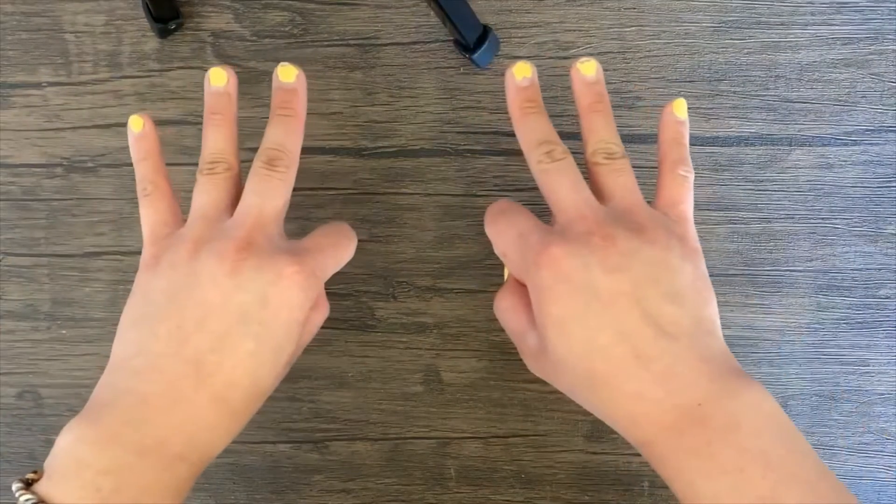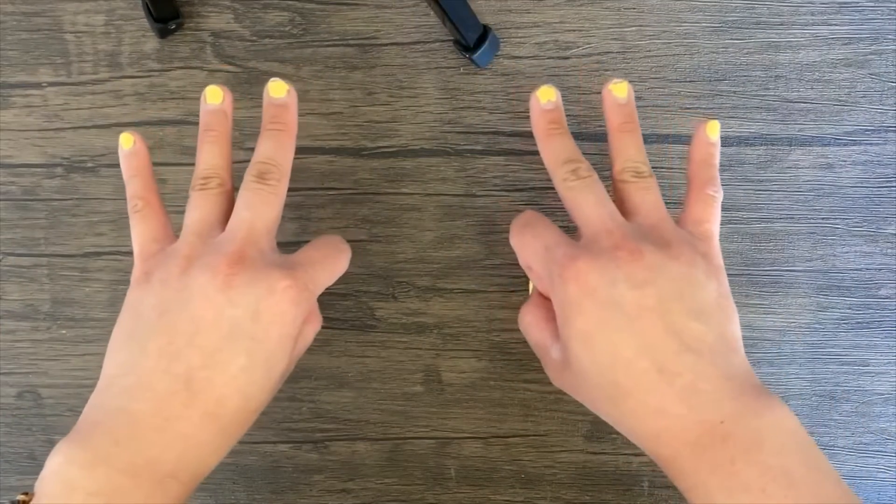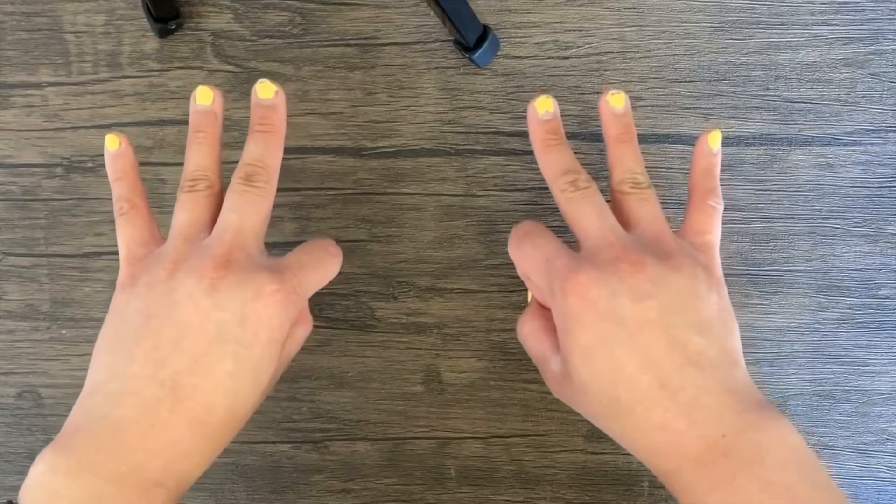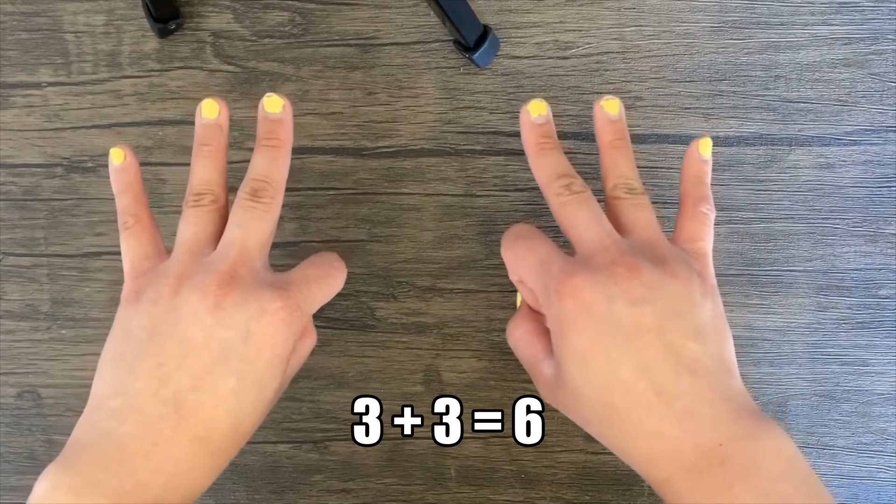Now show me three and three. What's the number sentence that matches this? That's correct. Three plus three equals six.